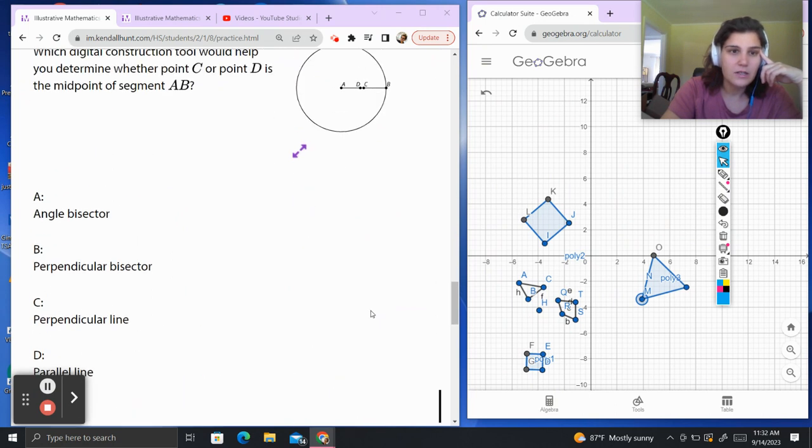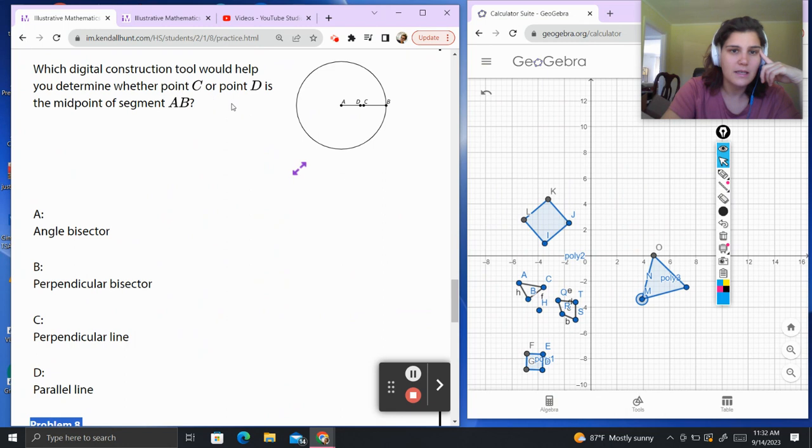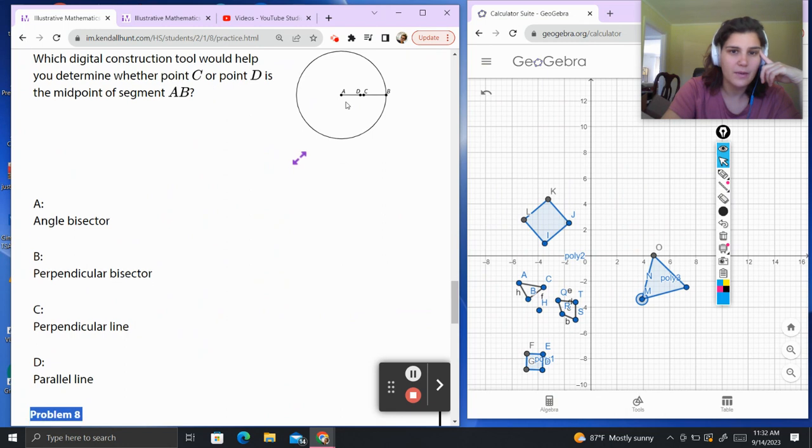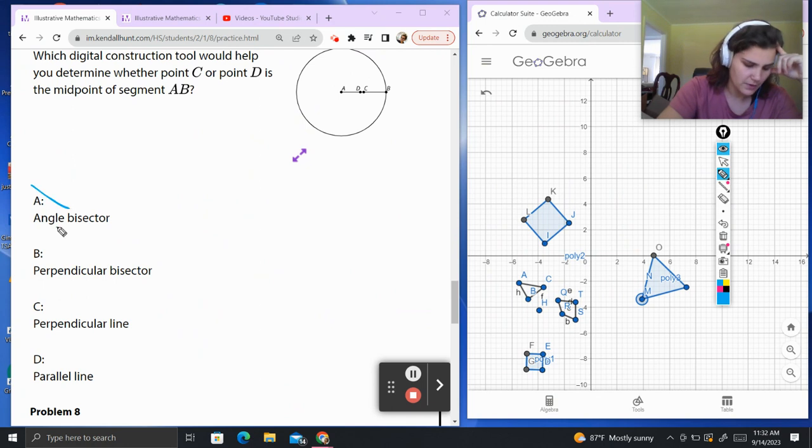Problem 7. Which digital construction tool would help determine whether point C or point D is the midpoint of segment AB? We've got to figure out where the midpoint is. Angle bisector: We have no angles to bisect, so that doesn't particularly help us. Perpendicular bisector: Well, if I perpendicularly bisected, I would find the middle, and the middle is the midpoint. So I think this is the correct answer.